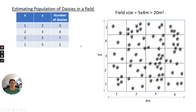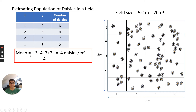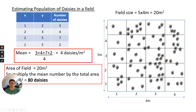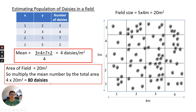Each quadrat in this instance is 1 metre squared. To work out the mean number of daisies, total up the number of organisms in each quadrat and divide by the number of samples. We did four samples: 16 divided by 4 gives 4 daisies per metre squared. Now we know the field size, so we estimate the total: mean number × total area = 4 × 20 = 80 daisies.